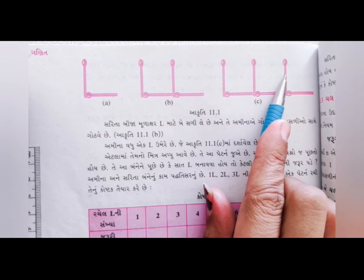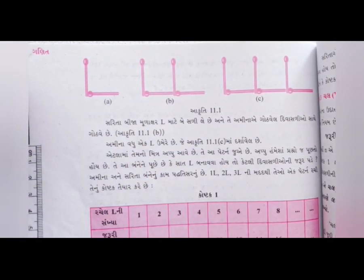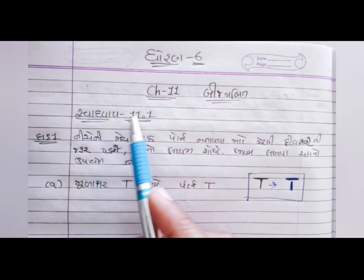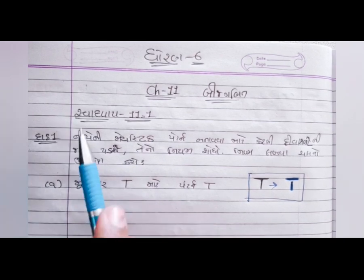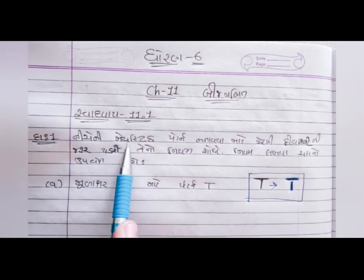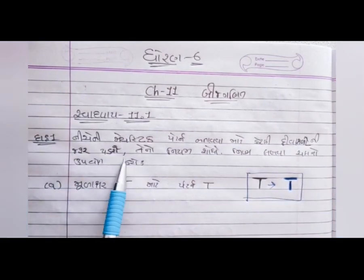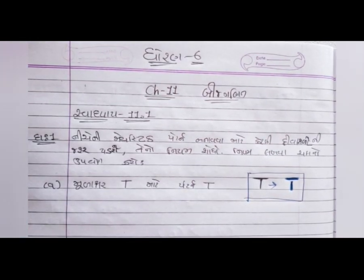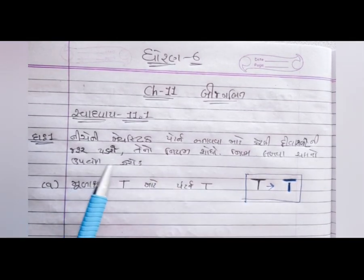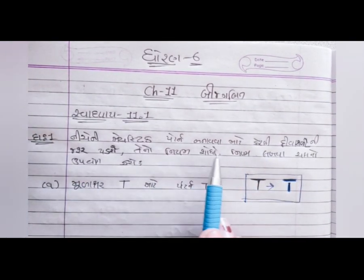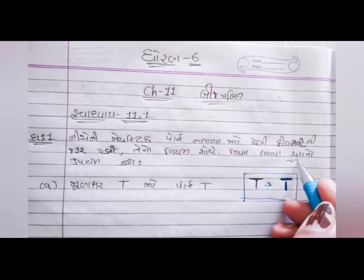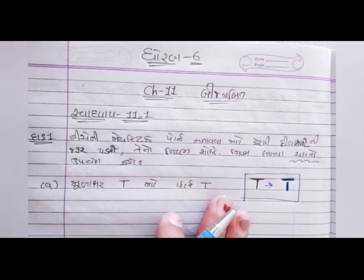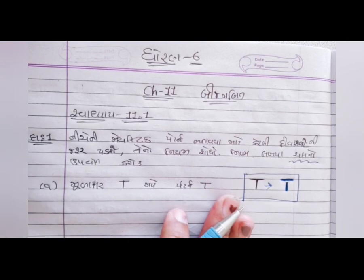આ એક 'L', આ બે 'L' અને ત્રણ 'L'. આ દીવાસળીના દાખલા આપણે સ્વાધ્યમાં ગણીશું. ઉદાહરણ: નીચેની મેચ સ્ટિક પેટર્ન બનાવવા માટે કેટલી દીવાસળી ચલ નો ઉપયોગ કરો? ચલ શું છે, પહેલા તે સમજીએ. દીવાસળી ગોઠવવાની રીત કઈ?